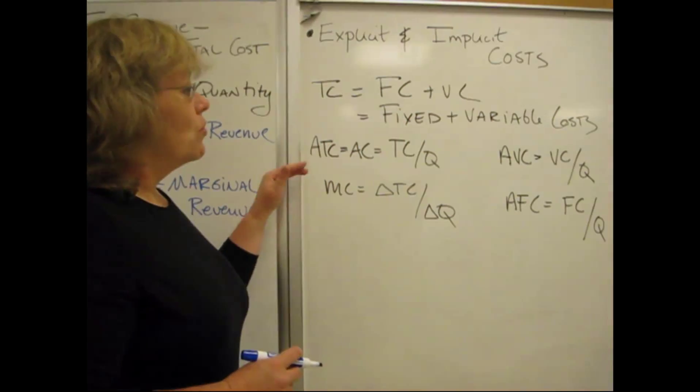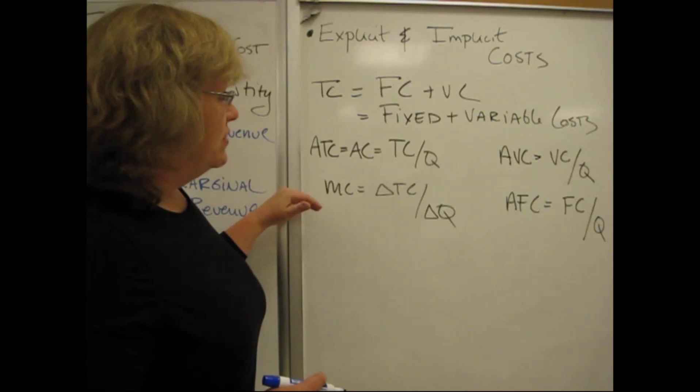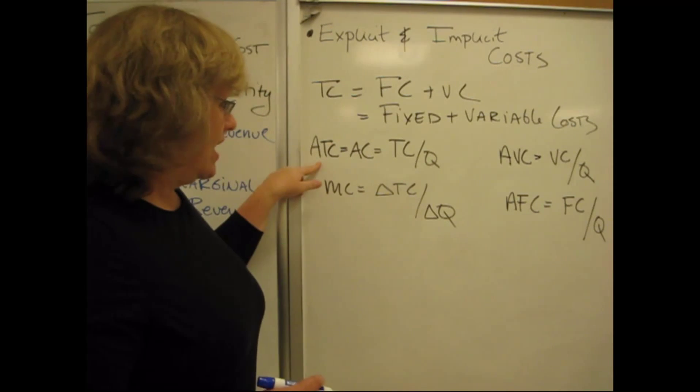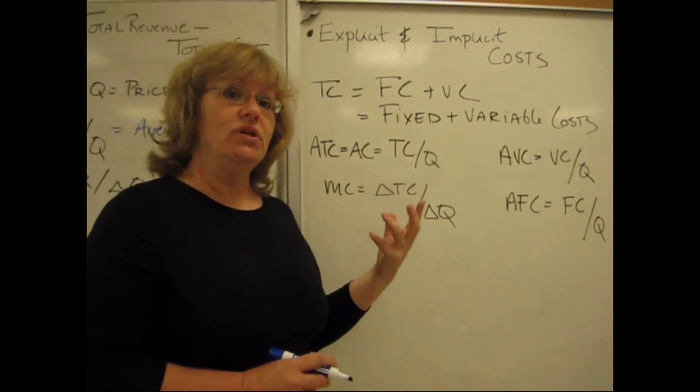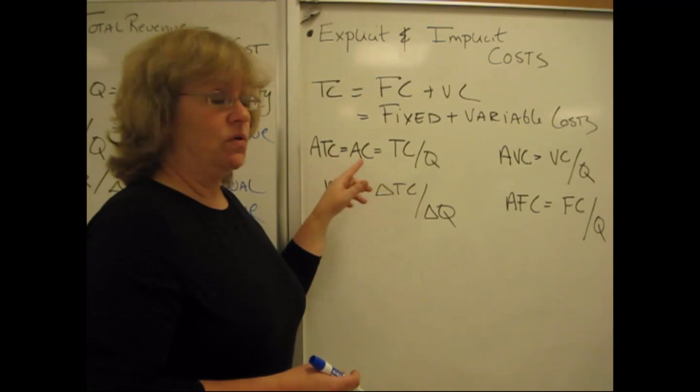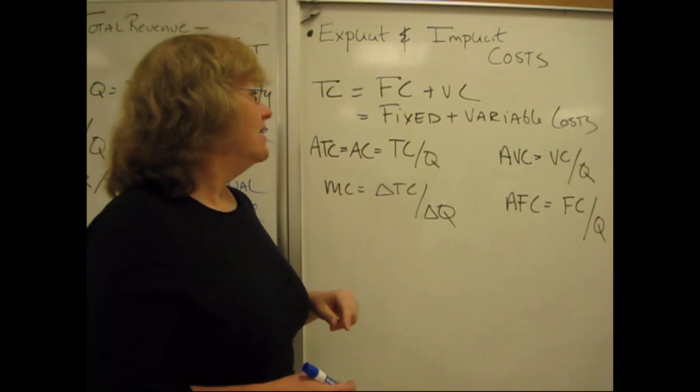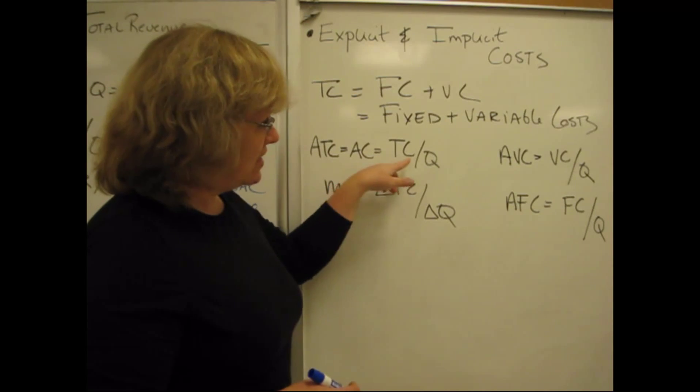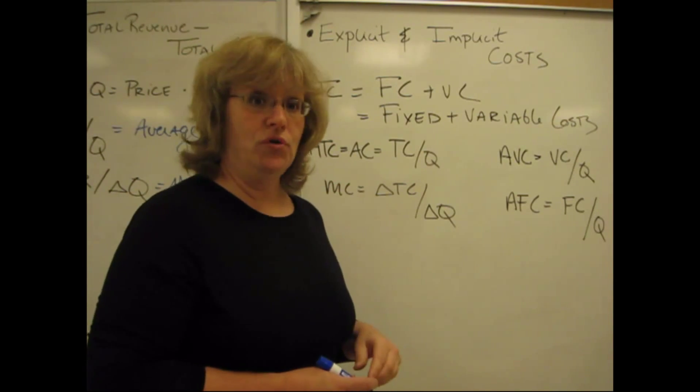Now back here, we're going to talk about a couple more definitions that are associated with costs. This one is average total costs. It's usually called ATC, but sometimes you'll see it as just plain old average cost, AC. That sometimes is the abbreviation for it. And that simply equals total cost divided by quantity. That's your per unit cost.